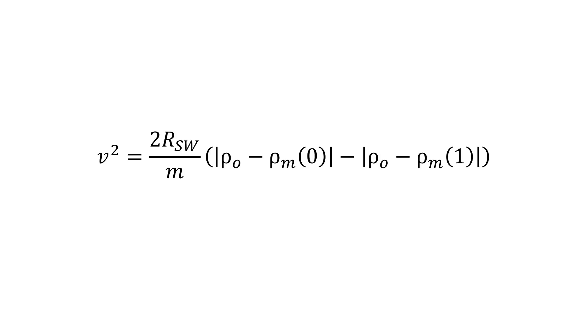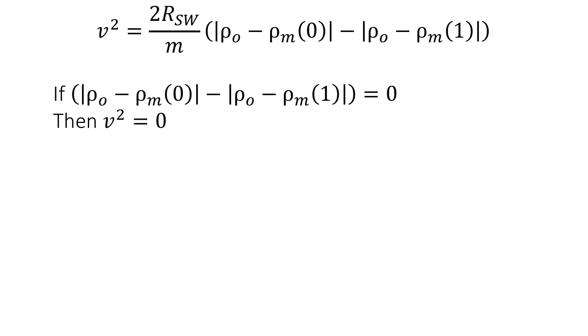But let's do a sanity check on our expression for the velocity at the instant before the object hits the ground. First we check the bracketed terms: if the difference between the medium's density at the initial and the final positions is zero, then there is no velocity, which makes sense.